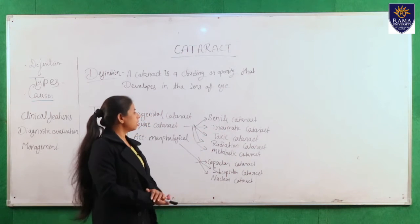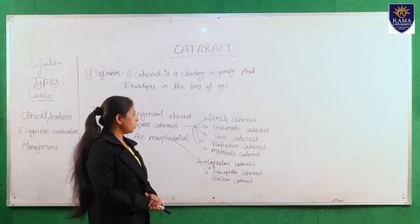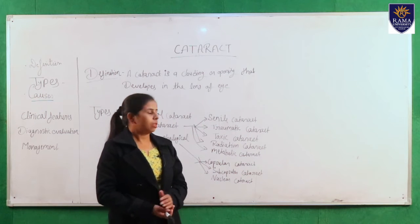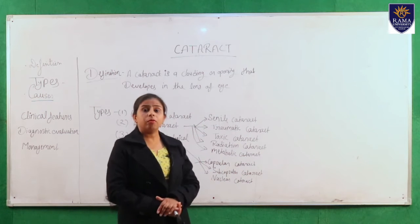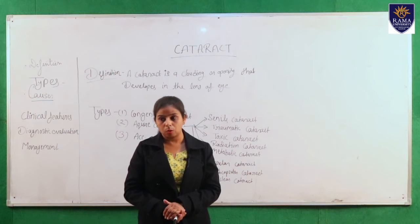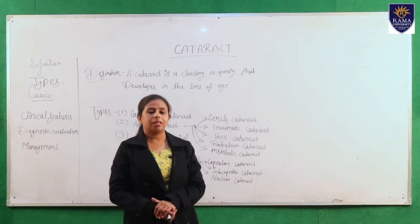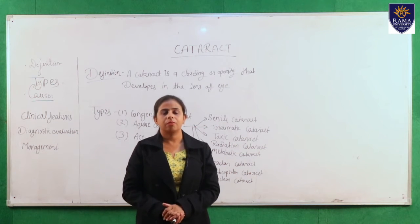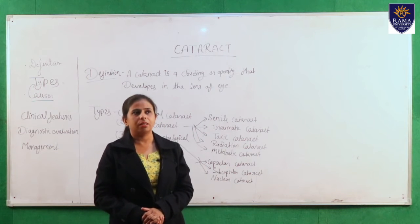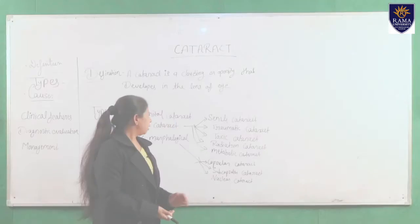Next is toxic cataract. In toxic cataract, many photo-toxic drugs can cause this type of cataract, such as tranquilizers, corticosteroids, thiazides, and oral contraceptives.